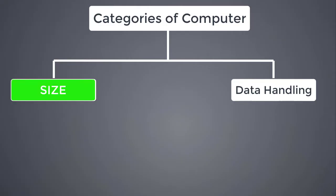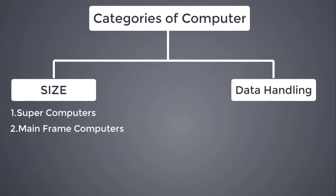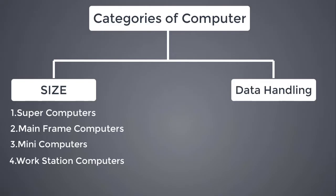Second topic: categories of computer. Computers are categorized mainly depending upon size and depending upon data handling. Based on size, the categories are: Super Computer, Mainframe, Mini Computers, Workstation, and PC.